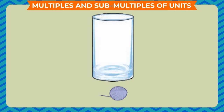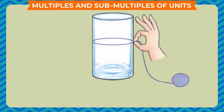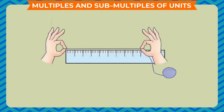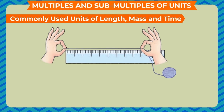Take a glass of uniform shape and a long thread. Hold one end of the thread at a point on the outer surface of the glass with the help of your thumb. Now wrap the thread along the circumference of the glass until you reach the end you fixed. Hold the wrapped portion of thread from the ends and measure its length on the meter scale. The formula for circumference of a circle is applied here to find the radius of the glass.